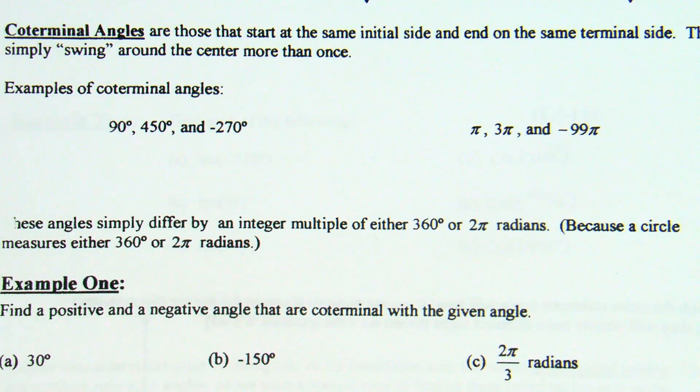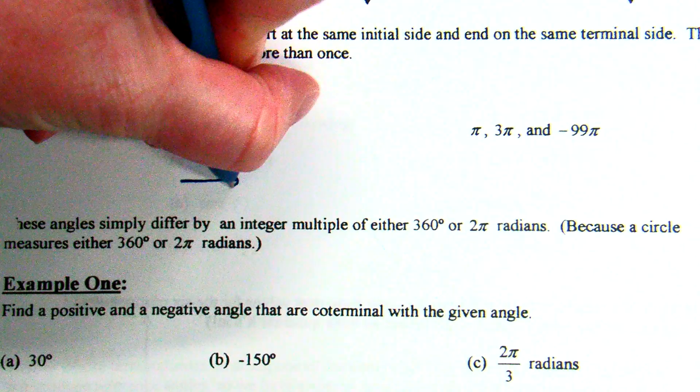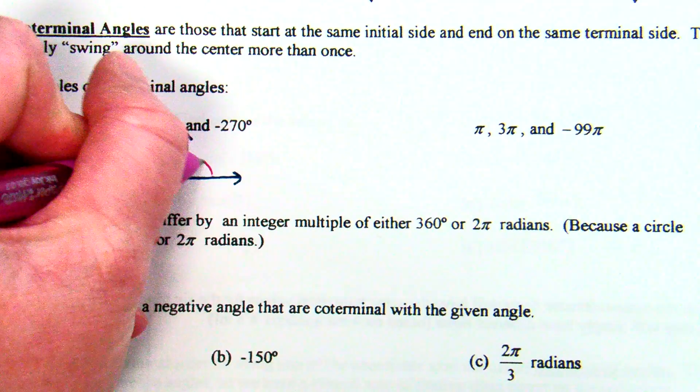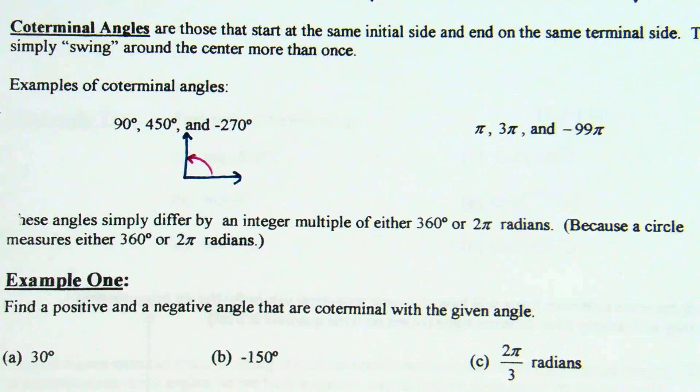Coterminal angles are those that start at the same initial side and end on the same terminal side. They simply swing around the center for more than once, or they might swing around the center in the opposite direction. So as I said, what I'm calling 90 degrees, there's multiple names for it. And so, for example, listed here are some examples of coterminal angles. The claim is that 90 degrees, 450 degrees, and negative 270 degrees all refer to the exact same angle.